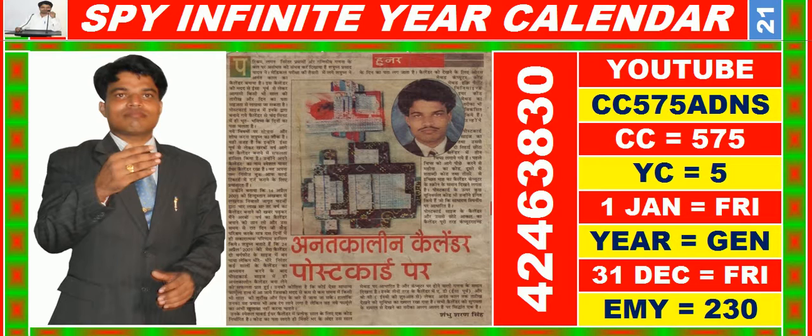In this video you are watching SPY Infinite: your calendar for the year having calendar code equal to 5,7,5. You may also search it on YouTube by CC 5,7,5 ADNS.